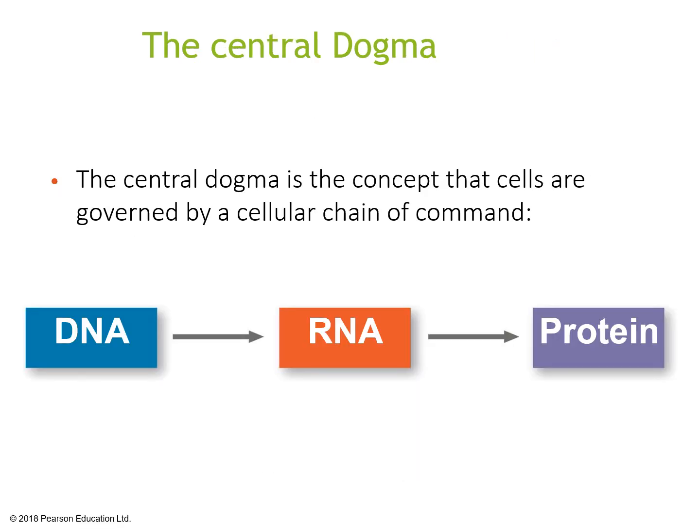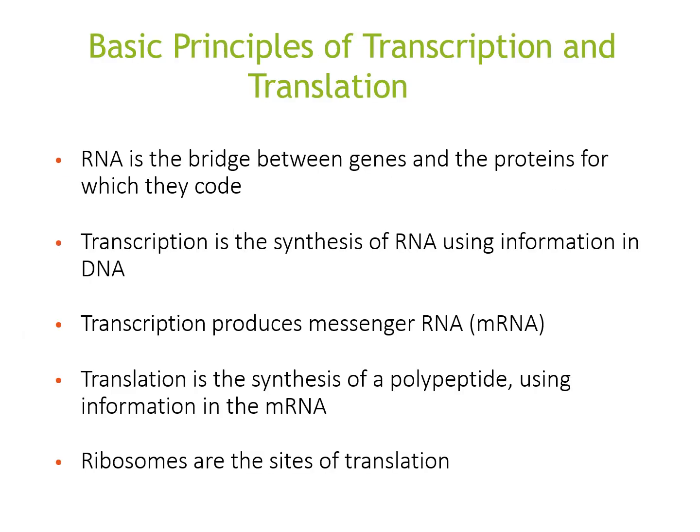The central dogma is the concept that cells are governed by a cellular chain of command: DNA goes to RNA to protein. DNA to RNA is transcription, and RNA to protein is a process known as translation. The basic principle is that RNA is the bridge between genes and the proteins they code for. Transcription is the synthesis of RNA using information in the DNA, and translation is the synthesis of a polypeptide using information in mRNA. The site where translation occurs is known as the ribosome.